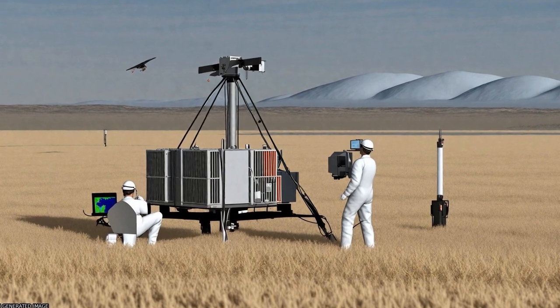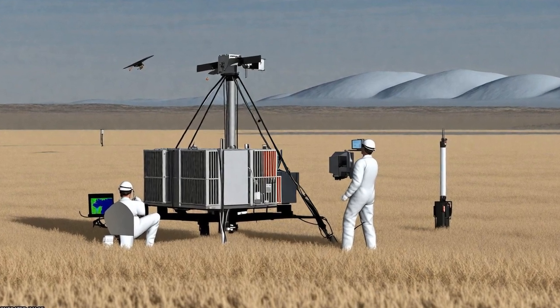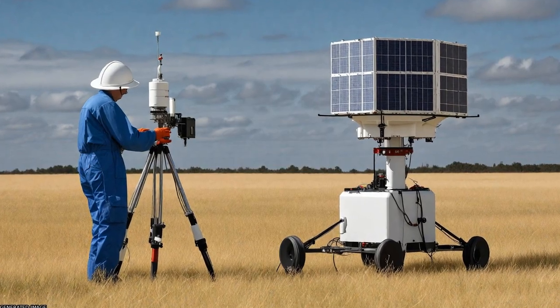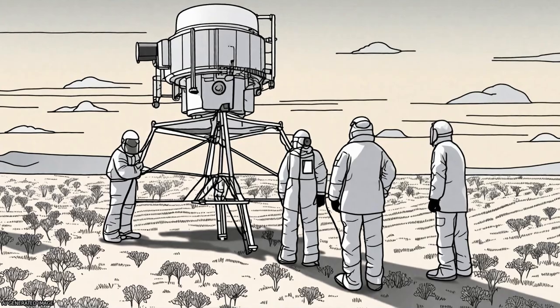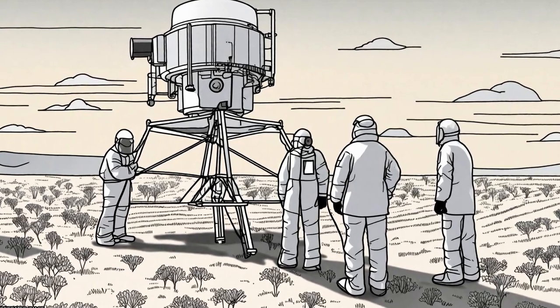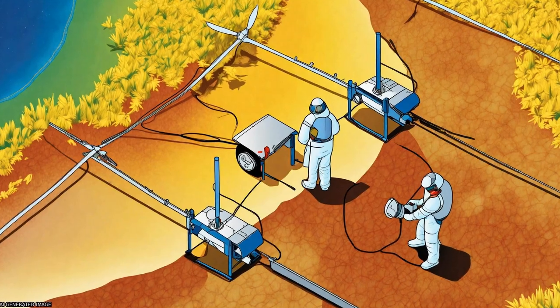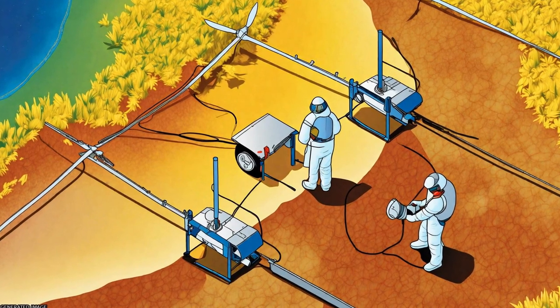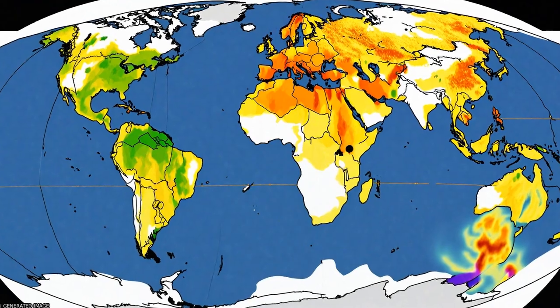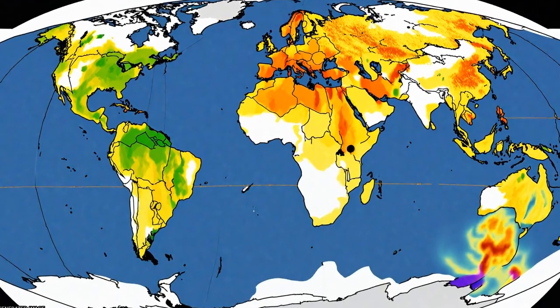Thermal Infrared (TIR) Remote Sensing of Land Surface Temperature (LST) provides valuable information about subsurface moisture status required for estimating evapotranspiration (ET) and detecting drought.